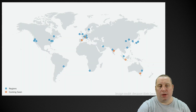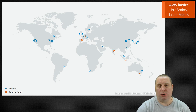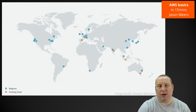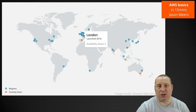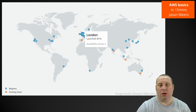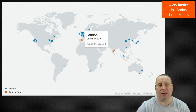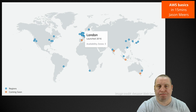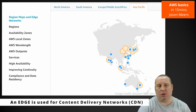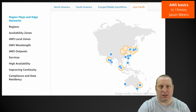AWS is divided up into regions — Amazon Web Services sees the world in regions. You'll see that for every blue dot there is a region where Amazon have data centers. Each region is subdivided further into things called availability zones. As an example, there's a region called London which was launched in 2016, and inside the London region there are three availability zones. If you ever want to have a look at what regions, zones, and edges there are, you can always go to the AWS website.